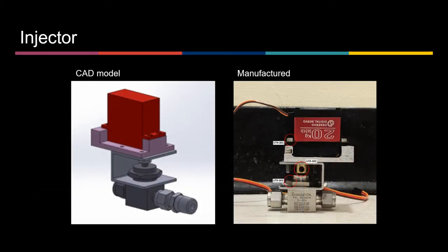The next subsystem is the injector, which consists of an Arduino controlled servo motor, an in-house design housing, and a switch lock ball valve. As seen here to the left is our initial design, and to the right is the final assembly, which we managed to manufacture as designed, almost to a T.